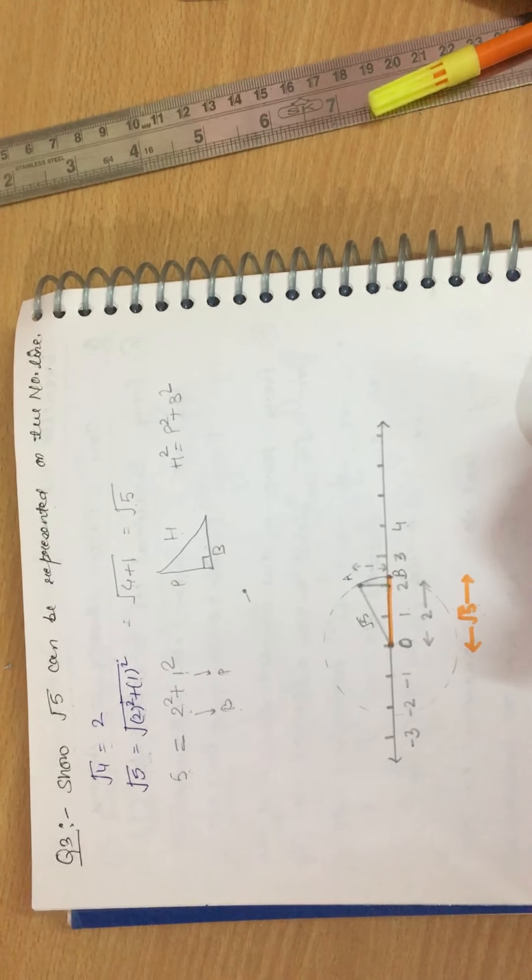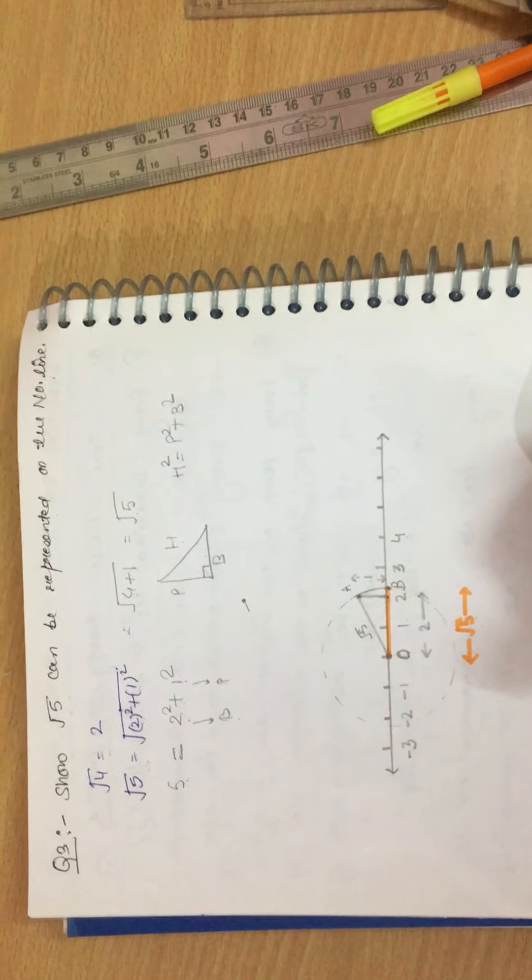So this orange line is here, from point zero to point B, that is under root five. Thank you so much.